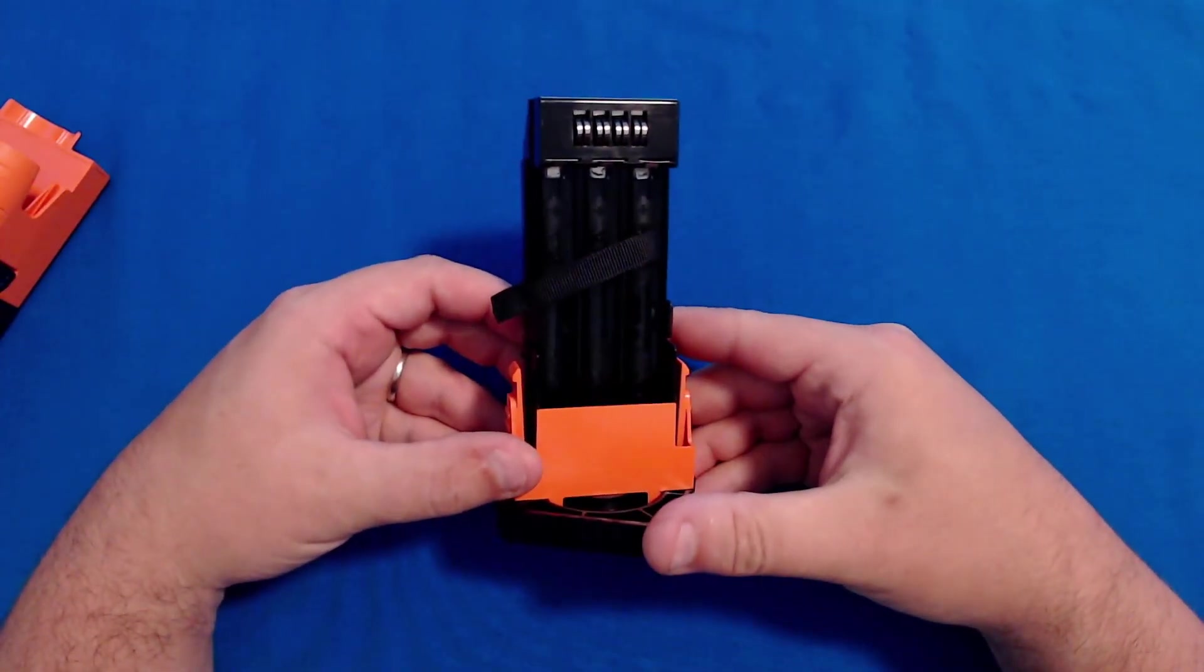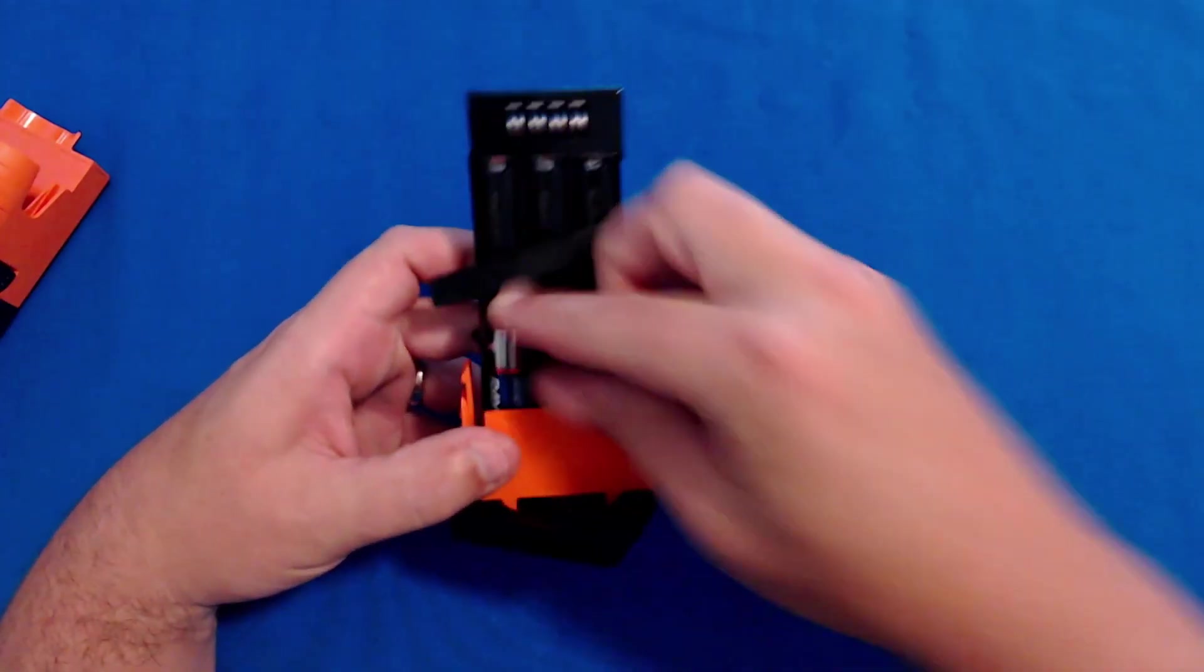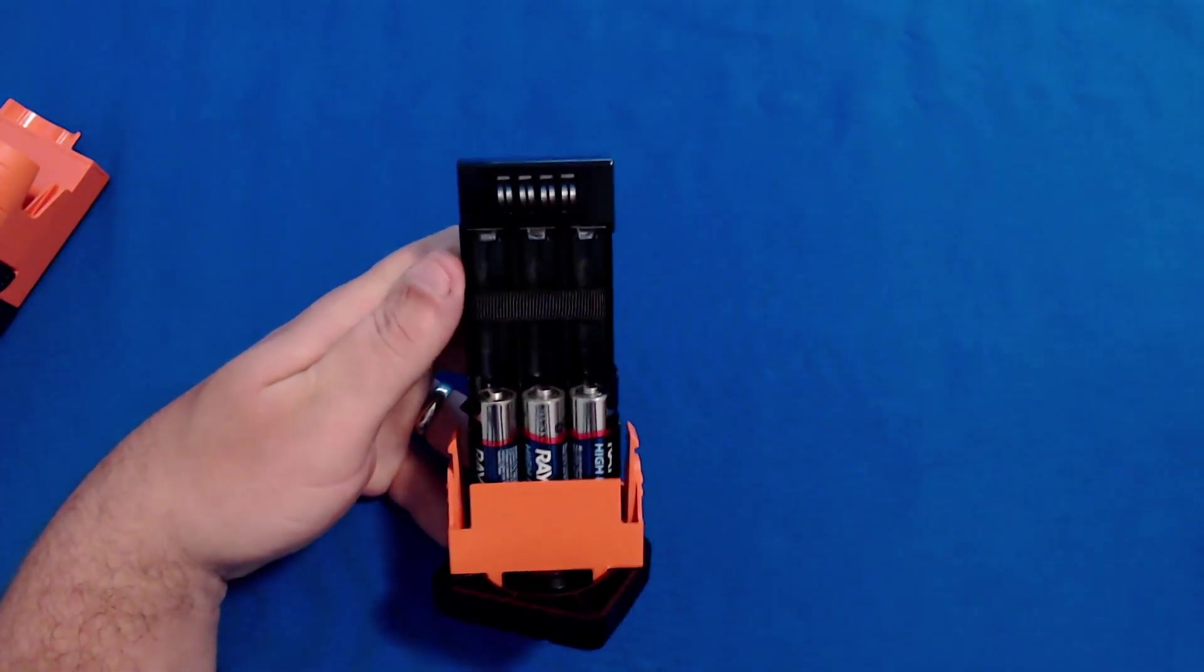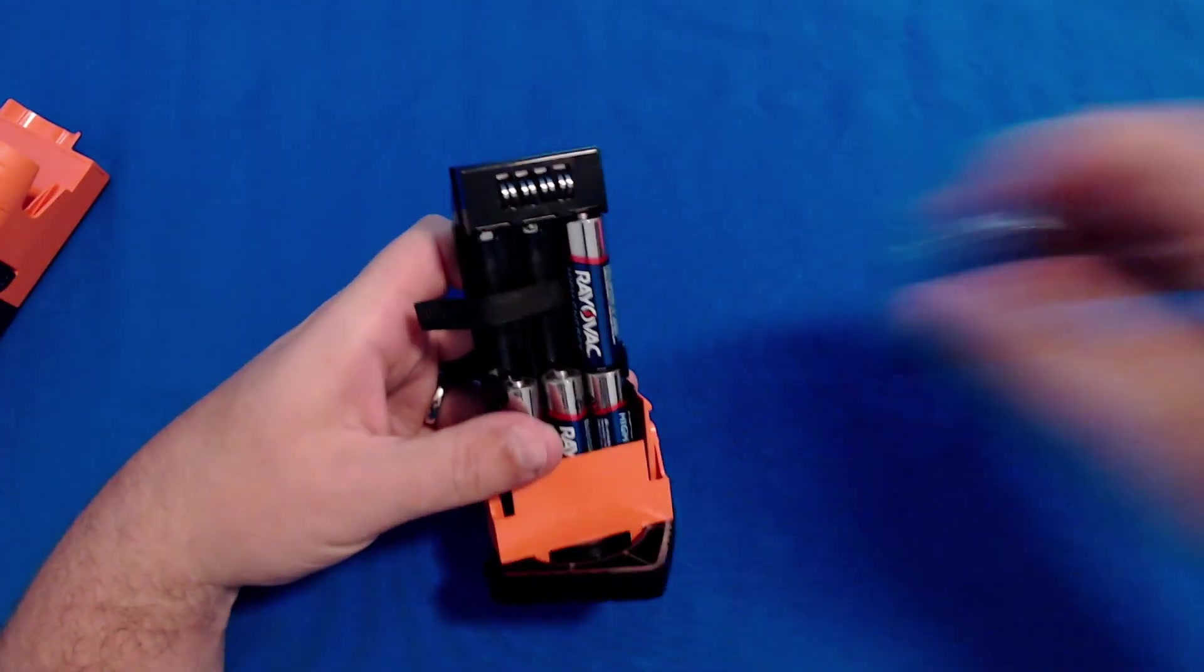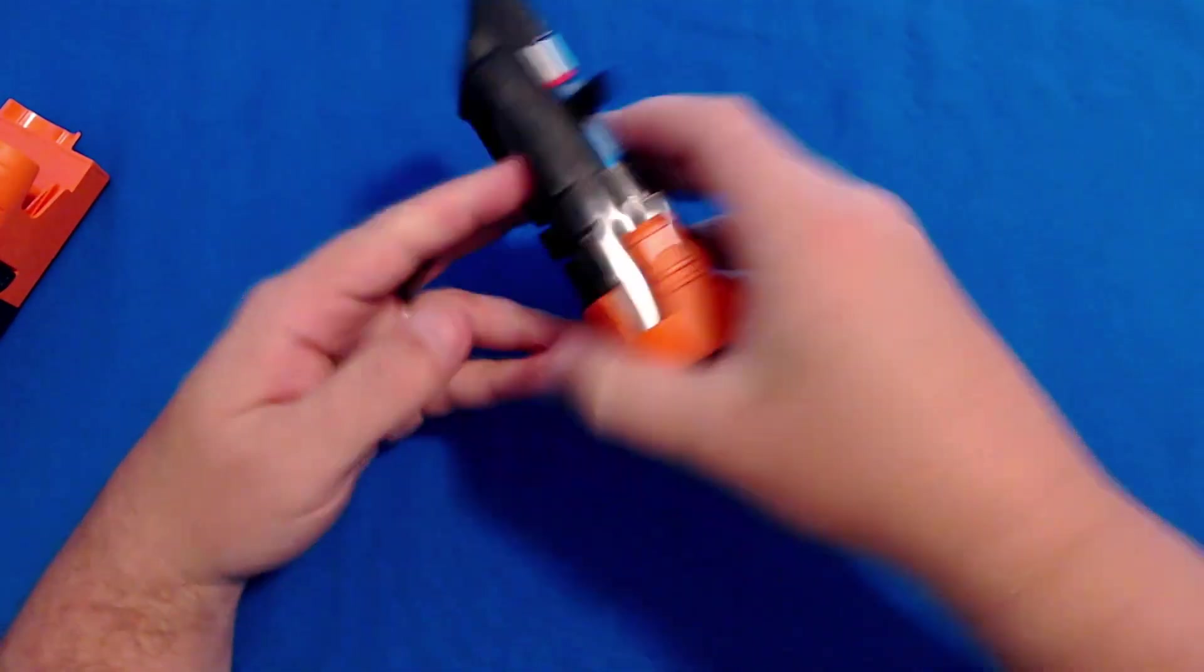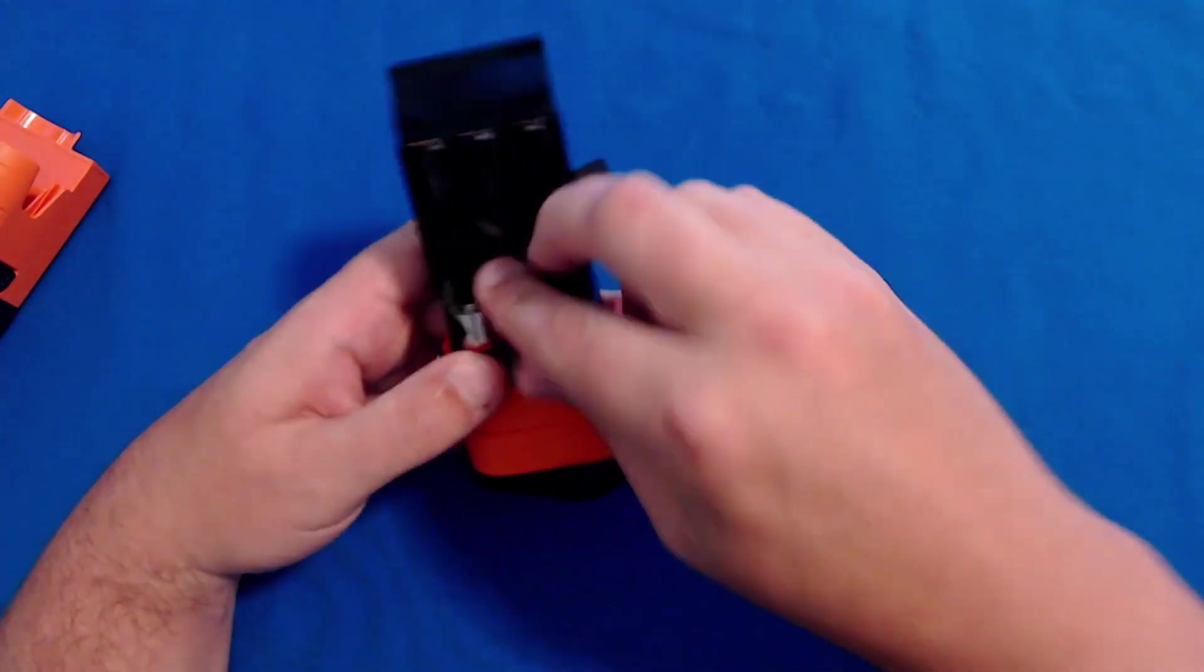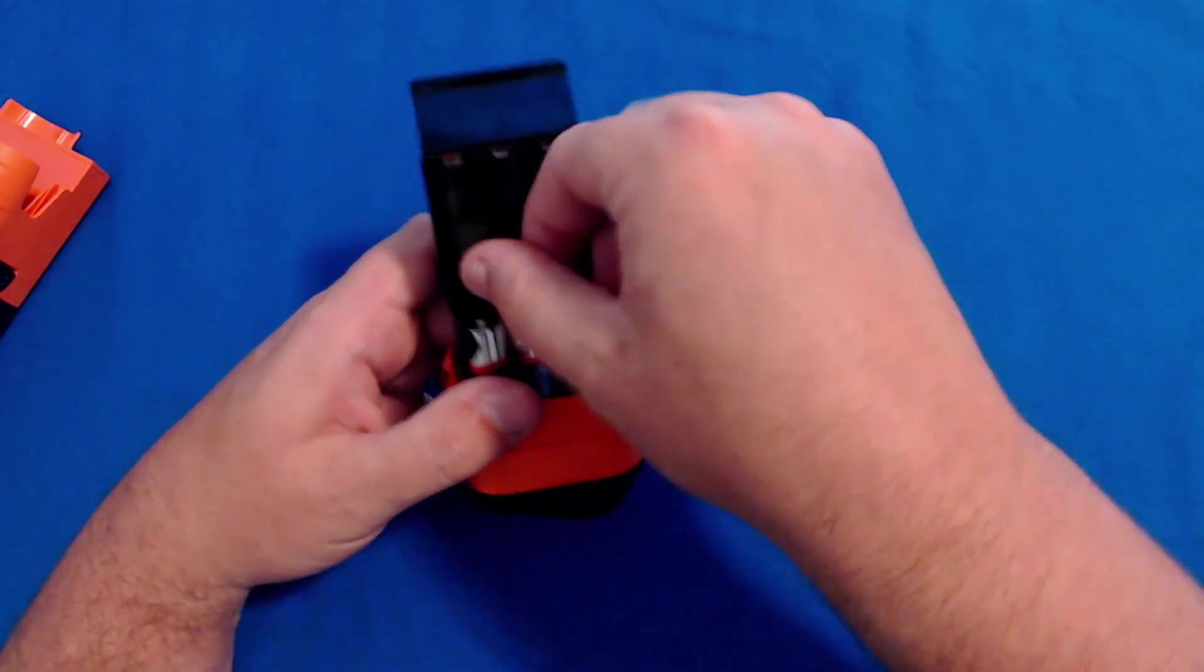Now that we've released the magazine from the clamshell housing, we can load it with alkaline double-A batteries, ensuring that the positive polarity of the battery is facing upwards and ensuring that I'm using the quick release ribbon inside the magazine. I'm going to load 12 double-A batteries. The clamshell battery takes 12 double-A batteries to ensure that the radio has a 10% transmit, 10% receive, 80% standby power cycle for 16 hours.